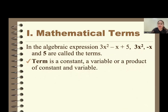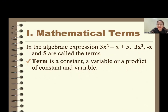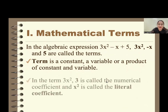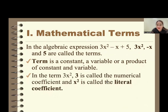We have the algebraic expression 3x squared minus x plus 5. We have 3x squared, we have negative x, and 5. We are going to identify what is a term. These are all terms — three or four given examples. A term is a constant, a variable, or a product of a constant and a variable.